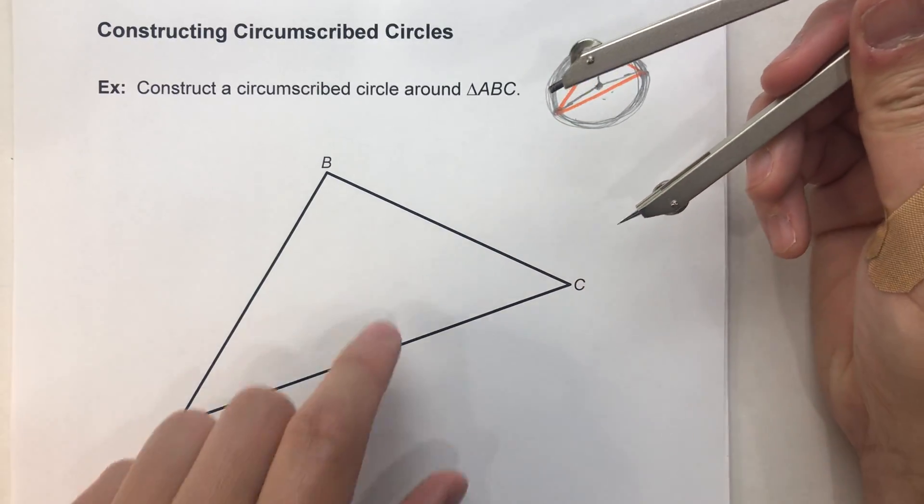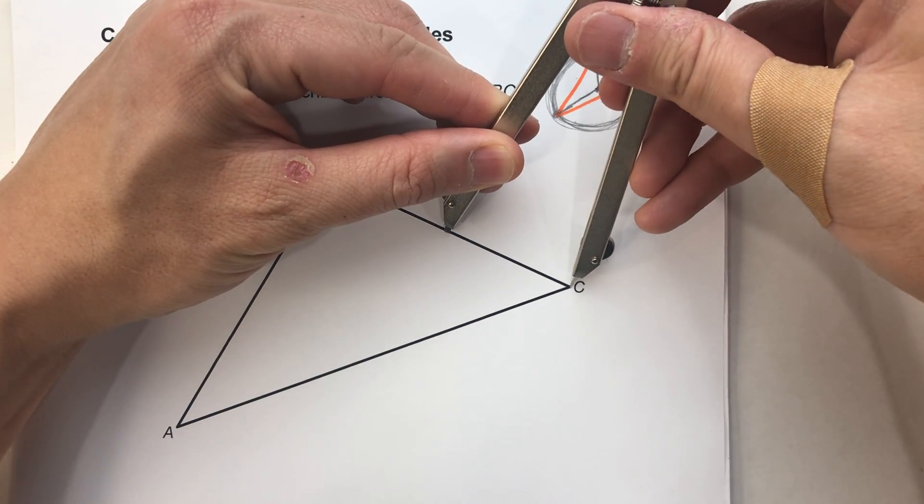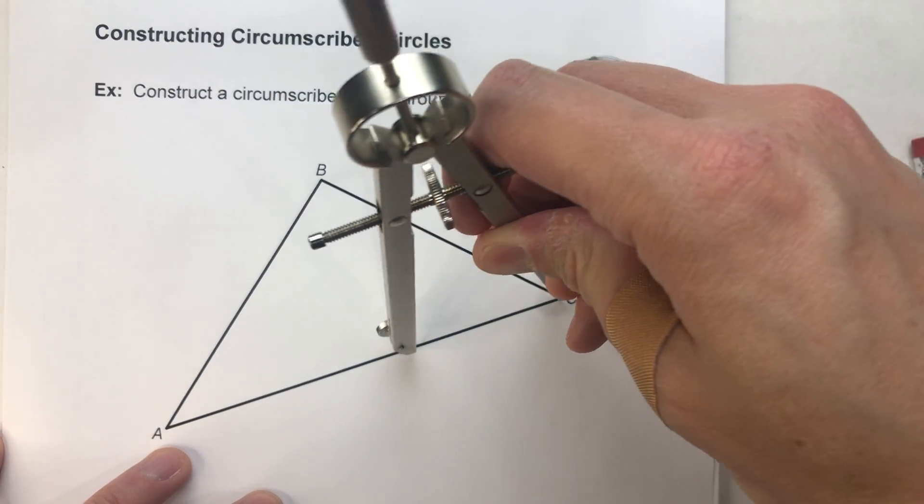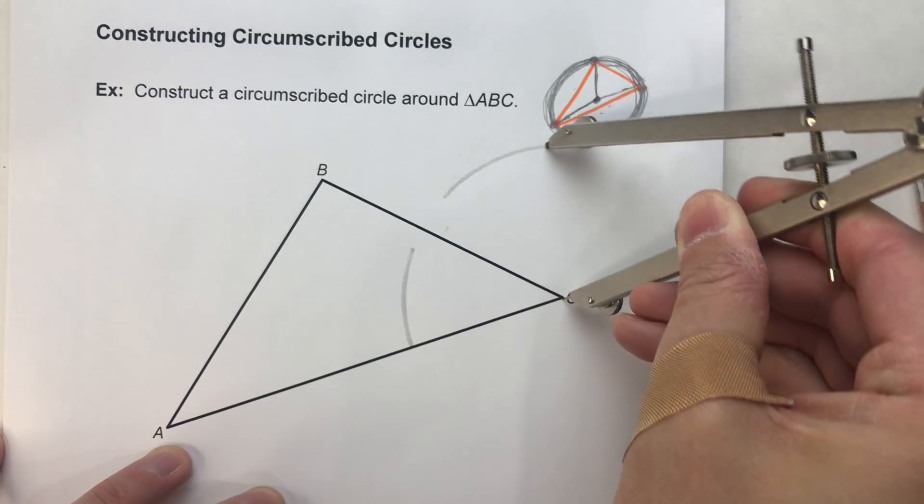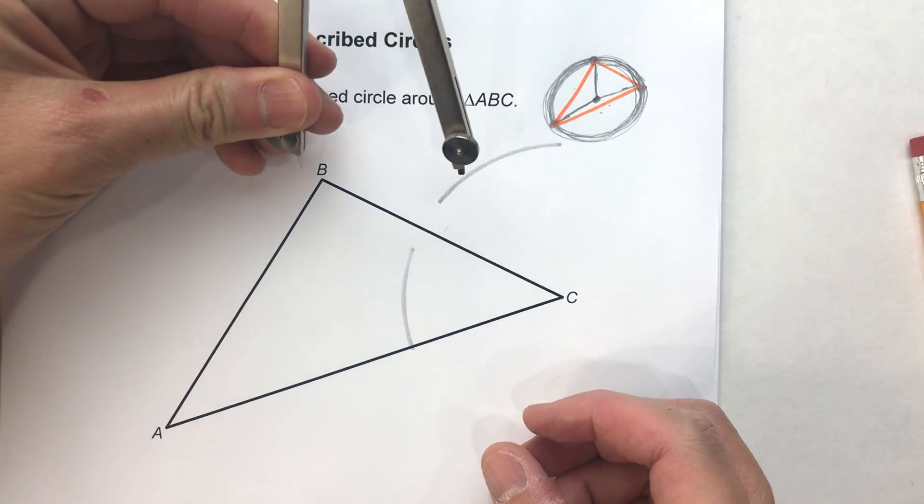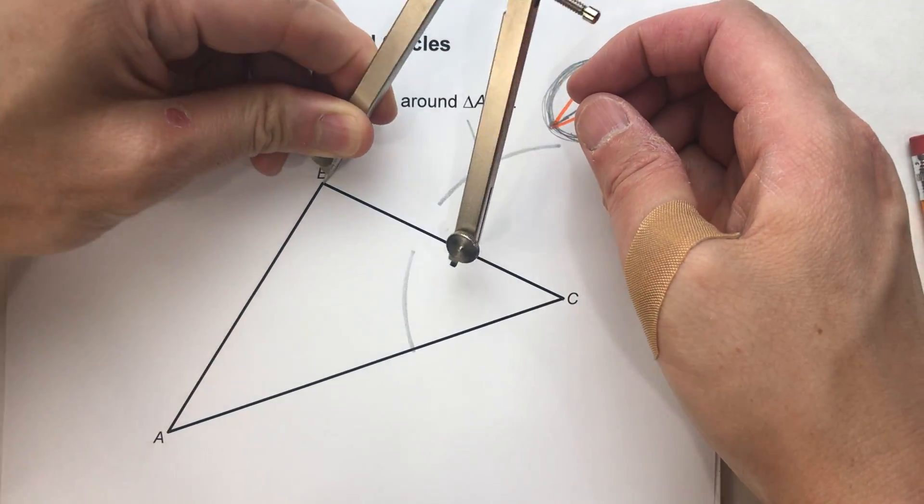So let's do this. I'll start with the short side. To construct a perpendicular bisector, set my compass to more than half the distance of this segment, and I'm going to swing an arc above and below the line segment. And I will do the same on the other side of the segment, here and here.